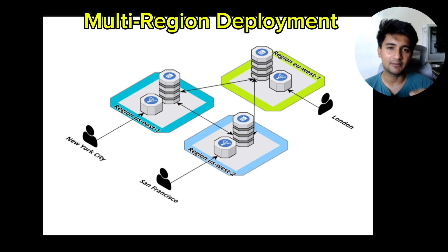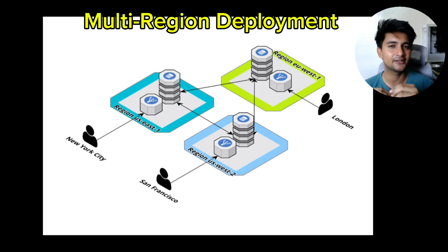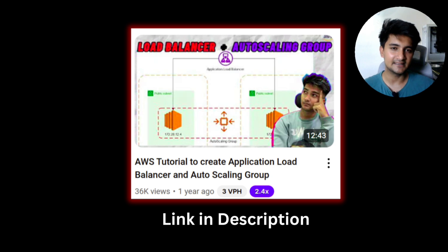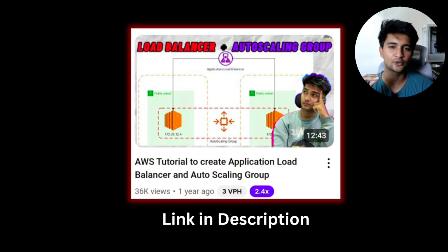Companies with important production applications deploy in more than one region so customers can always access them. You can achieve both scalability and high availability by deploying your servers in multiple AZs and routing traffic through a single load balancer. The video on creating load balancers and Auto Scaling Groups is linked in the description.